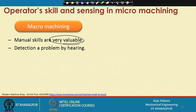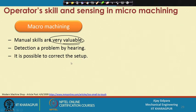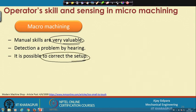Detection of a problem by hearing is possible in conventional machining. Different types of noise from chatter, imperfect tool-workpiece contact, a malfunctioning spindle, or a tool not fixed properly in the tool holder can all be detected easily. It is also possible to correct the setup during the process, and you can save a workpiece if it is not completely degraded.